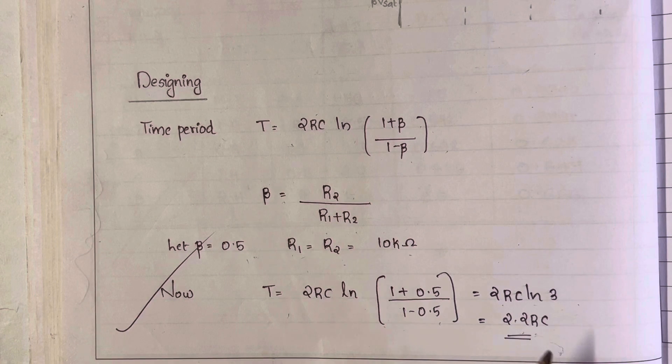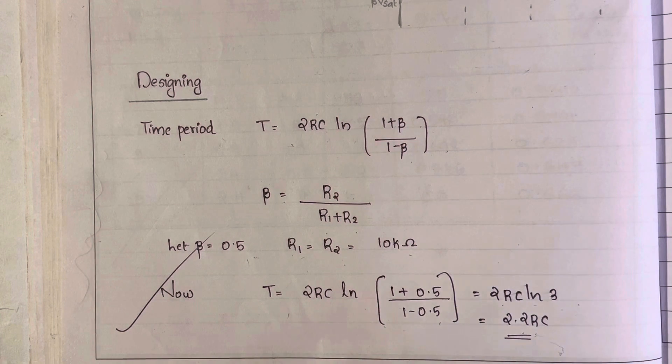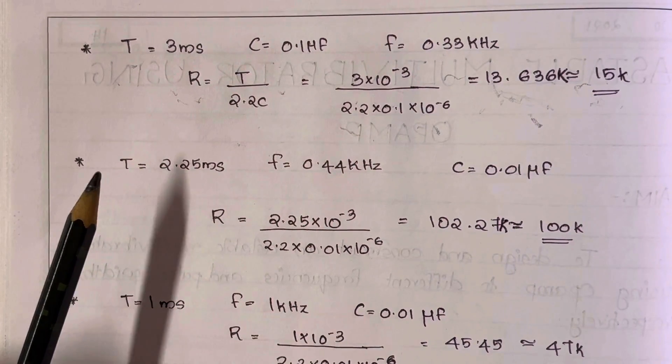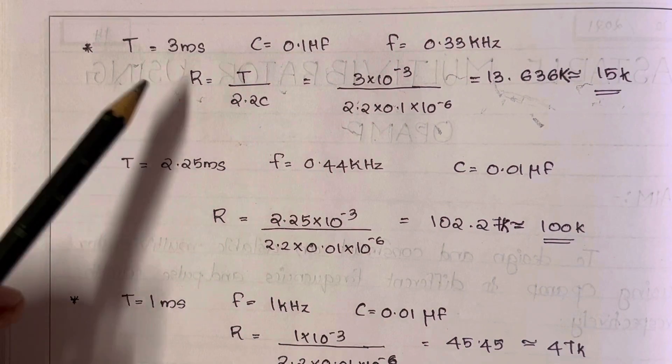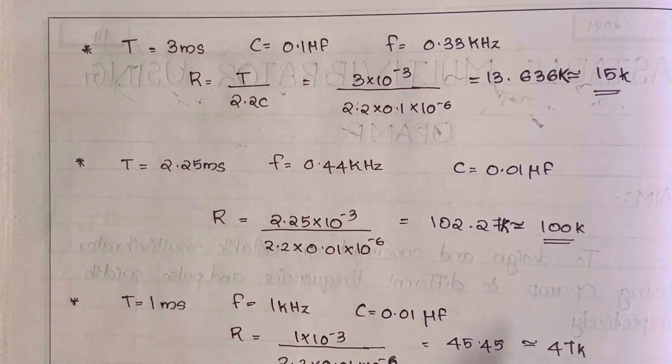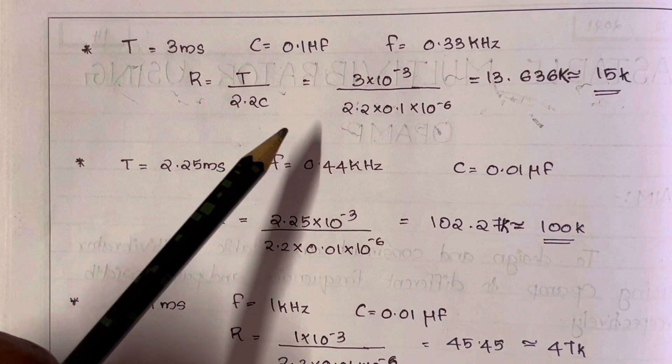From this, while designing the circuit, we have to find the value of R if C is given. If you are asked to design a circuit for a particular value of T, then you have to find R from this expression. I can show you two examples for the calculation of R. If you are asked to design an astable multivibrator for the time period T equals 3 millisecond and C equals 0.1 microfarad, then you can calculate R equals T by 2.2C.